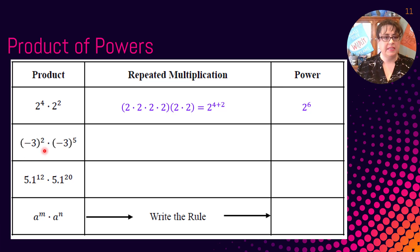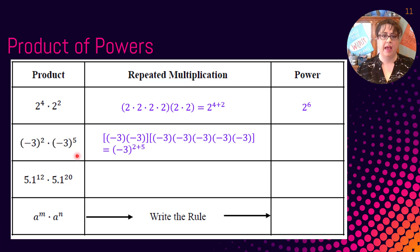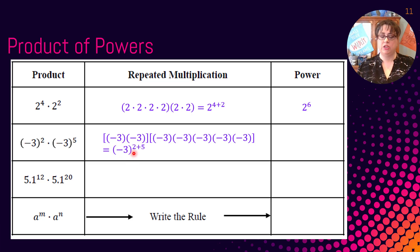So instead of writing them all out, we could just say we have two to the sixth. We could do that same idea here. We could say we have the base of negative three twice and the base of negative three five additional times. And so we know we have two and another five — two plus five — so it's negative three to the seventh power.